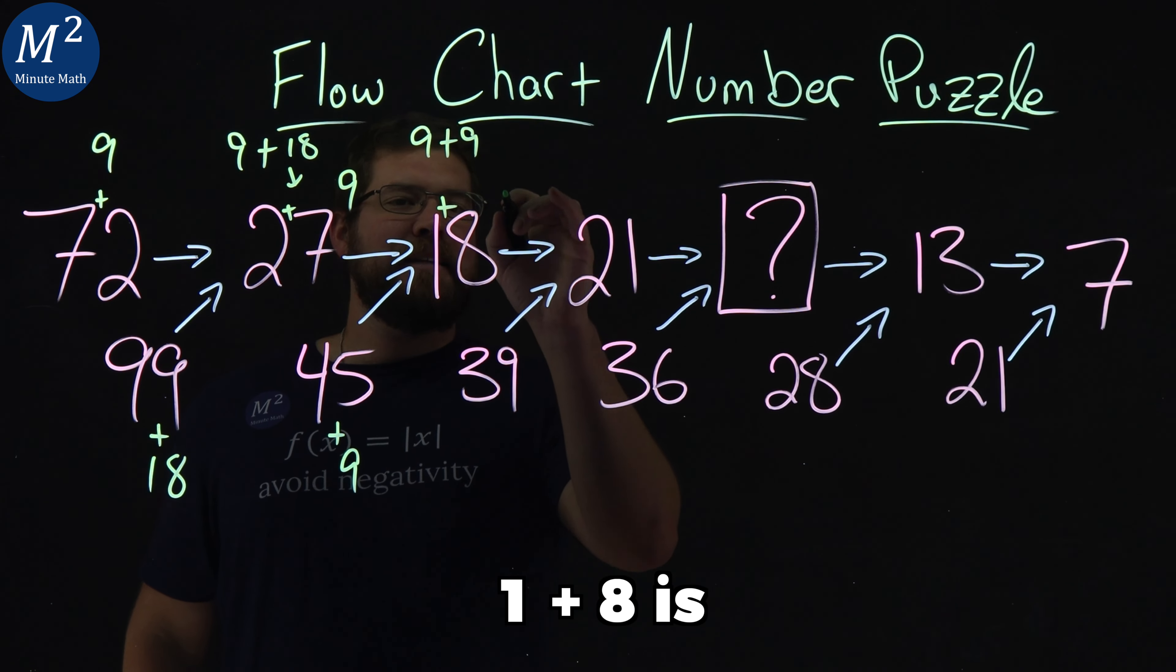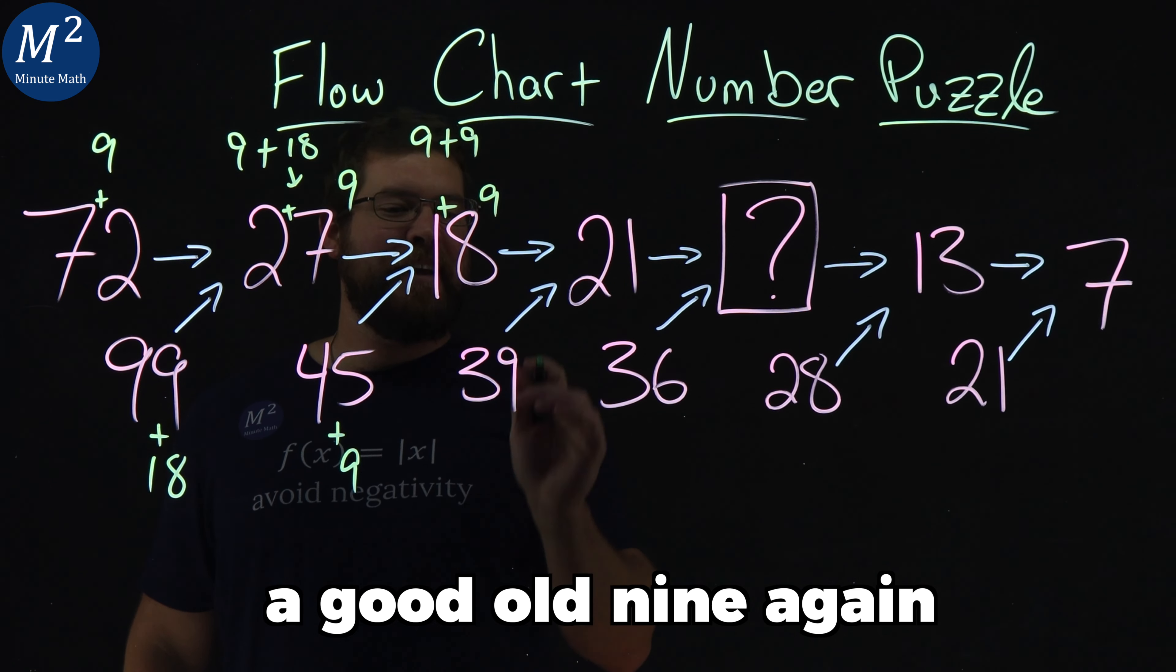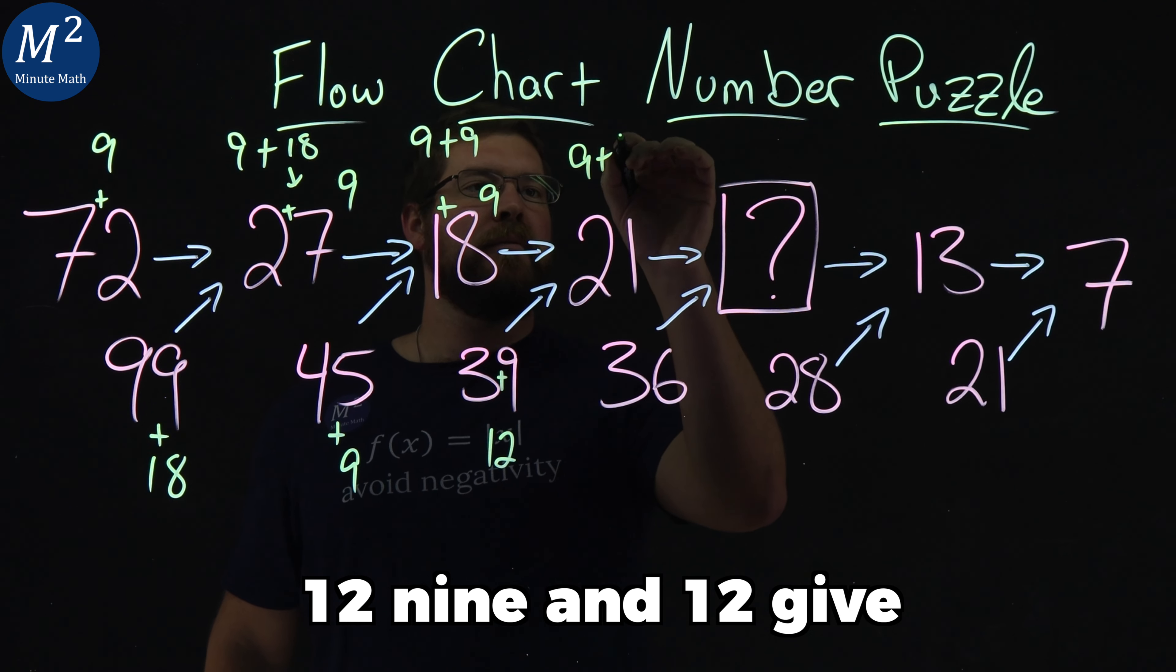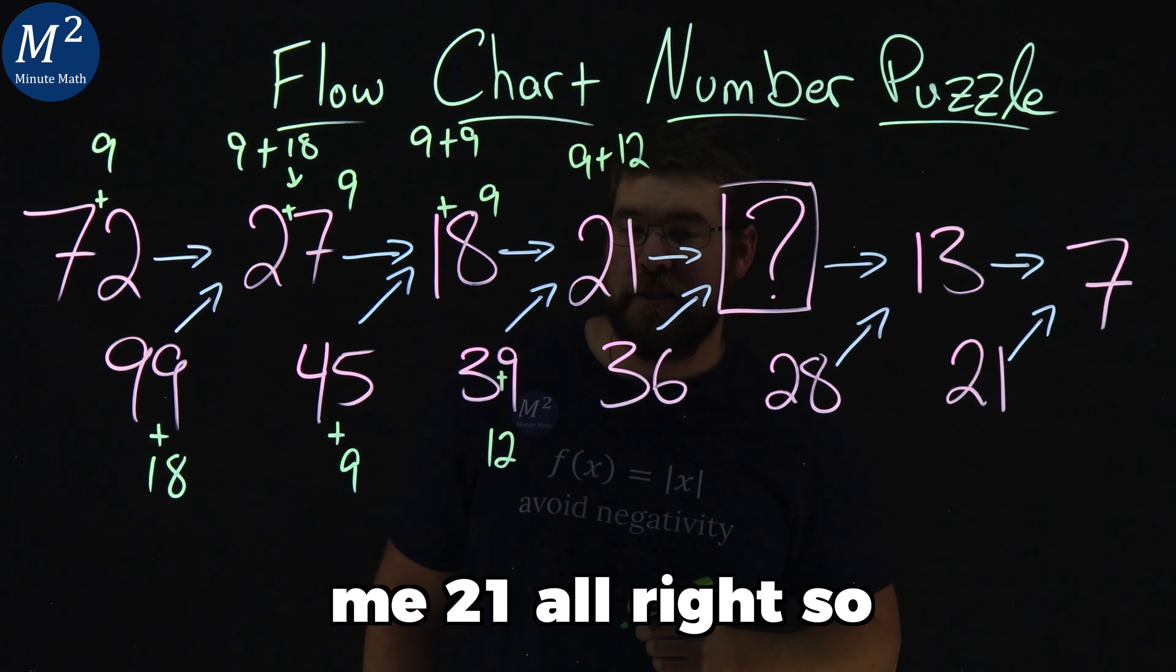1 plus 8 is a good old 9 again. 3 and 9 give you a 12, 9 and 12 give me 21.